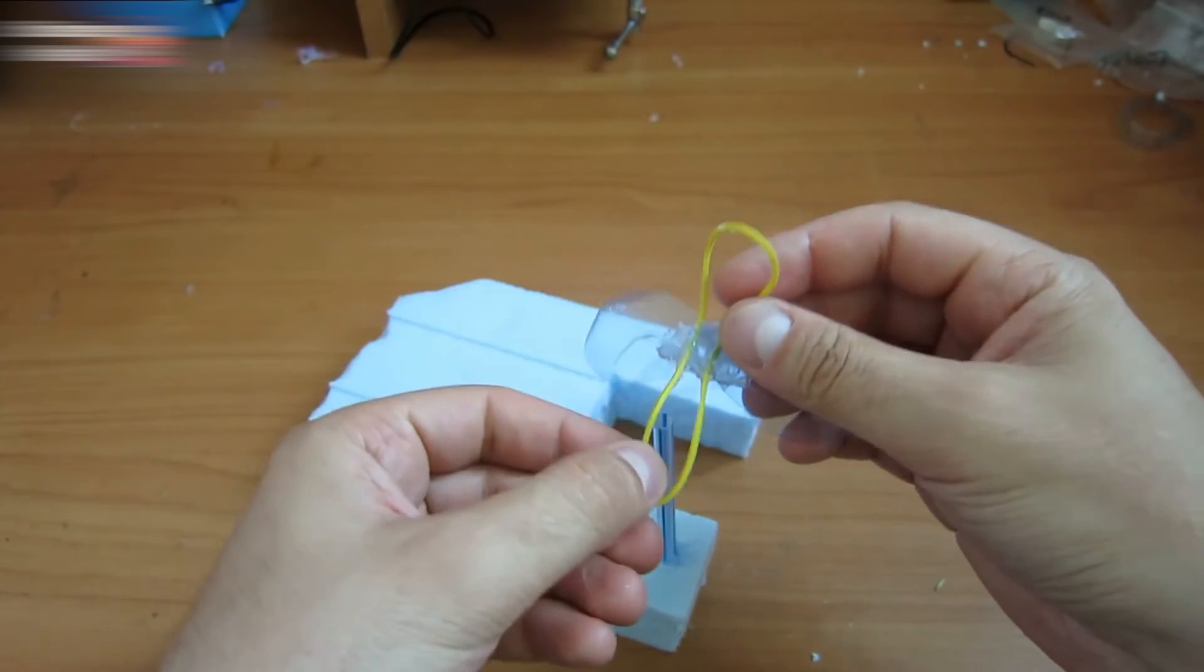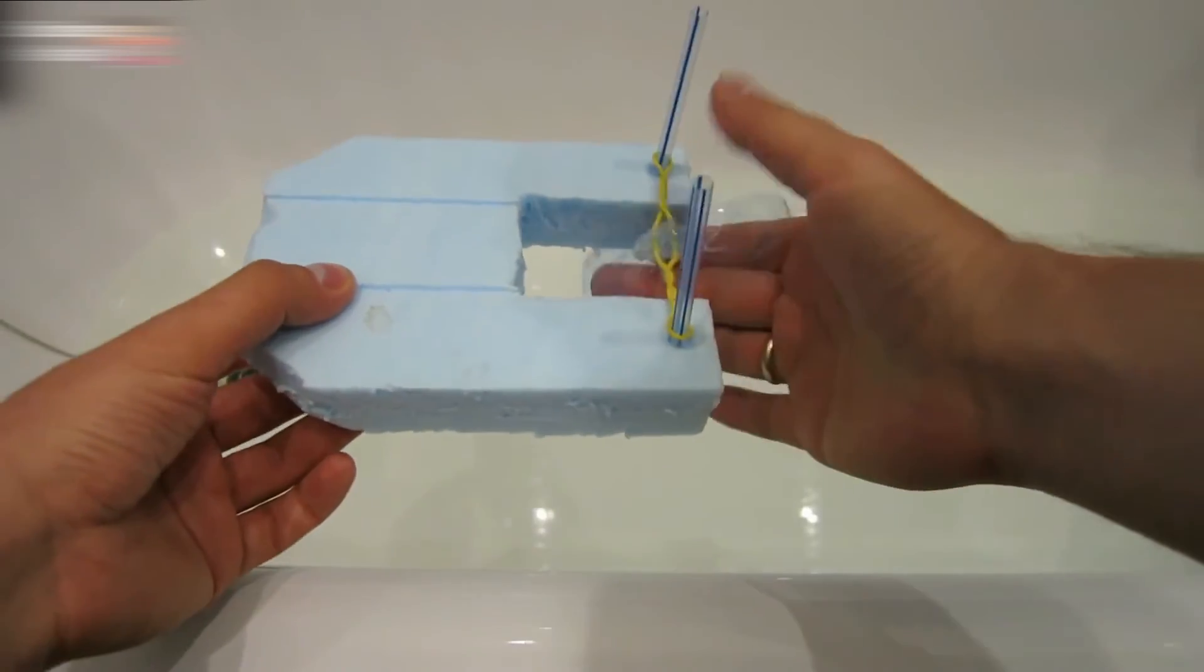Put the straws on the propeller and wind the rubber band motor. Test it.